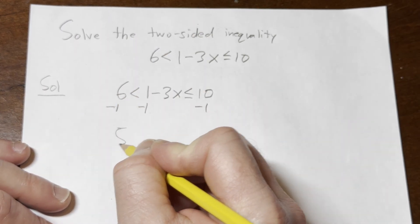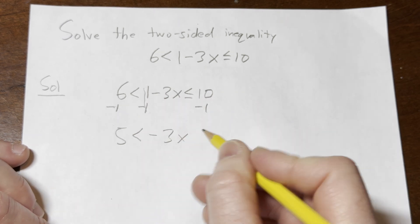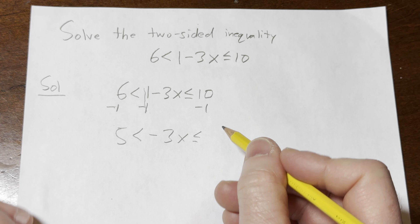6 minus 1 is 5, less than, these go away. We're left with negative 3x less than or equal to 10 minus 1 is 9.